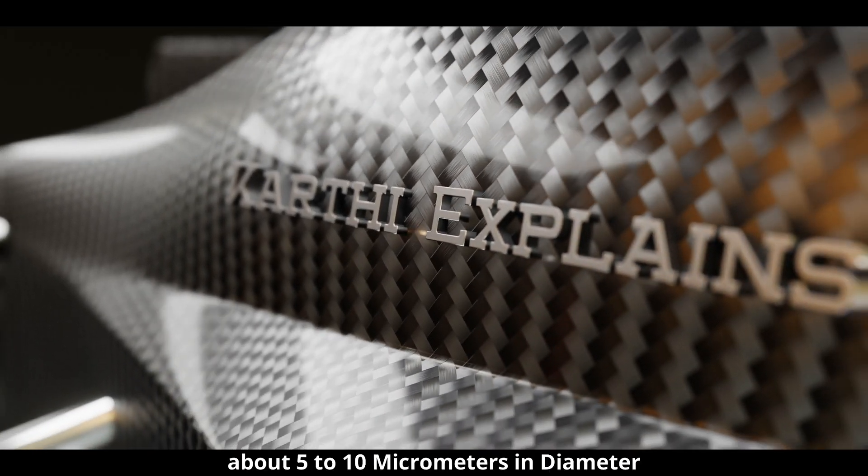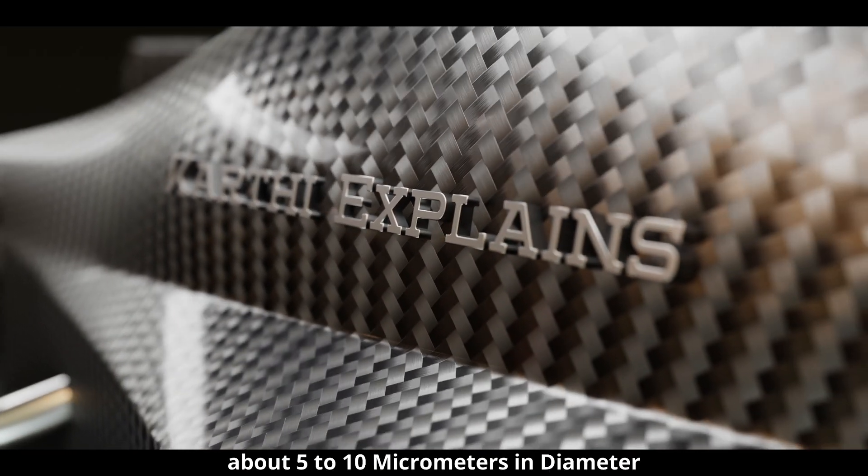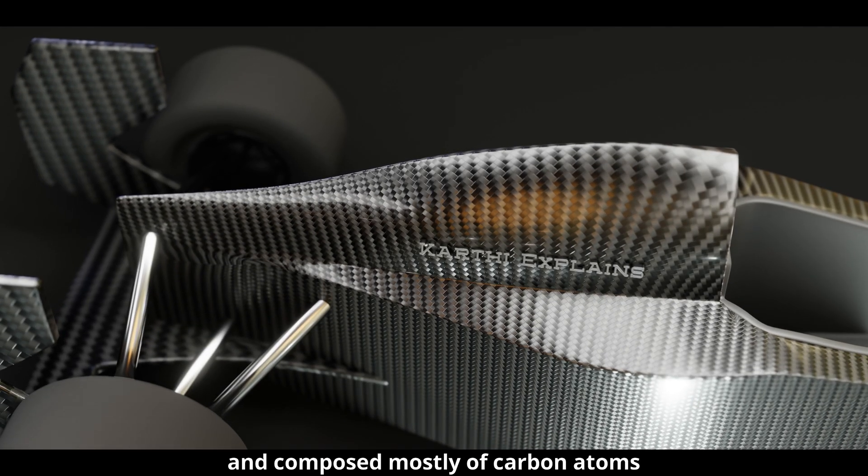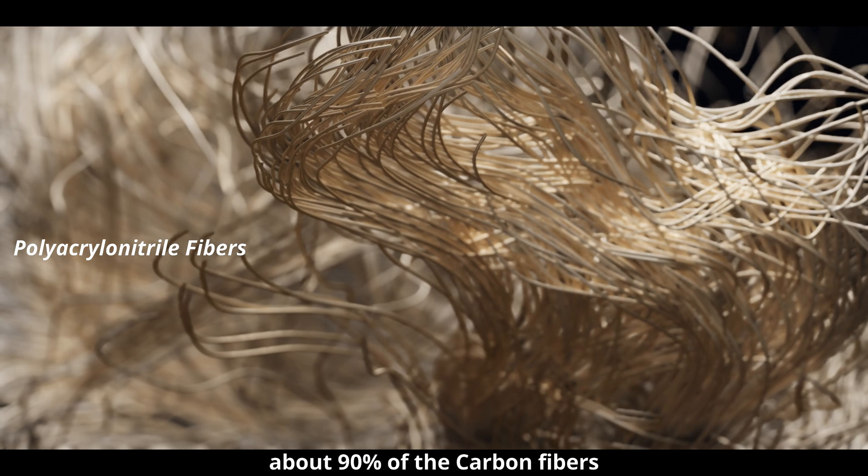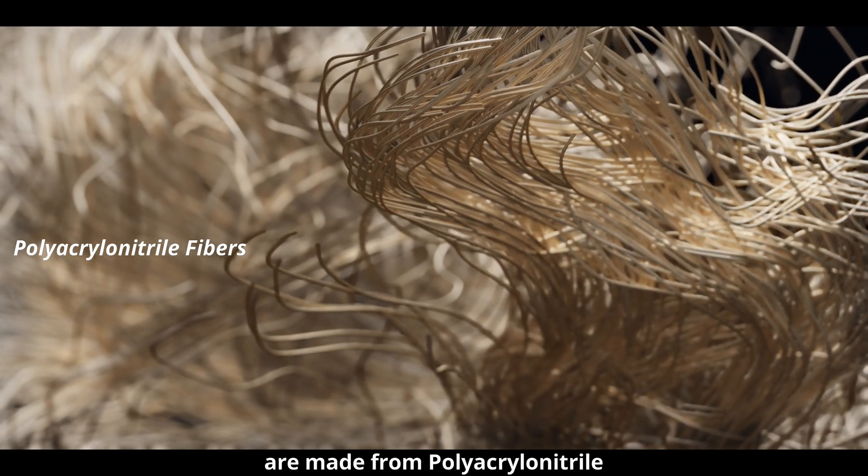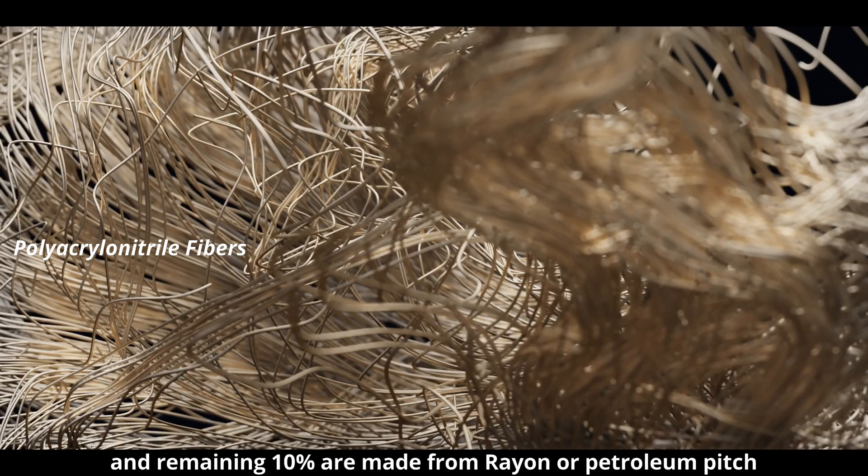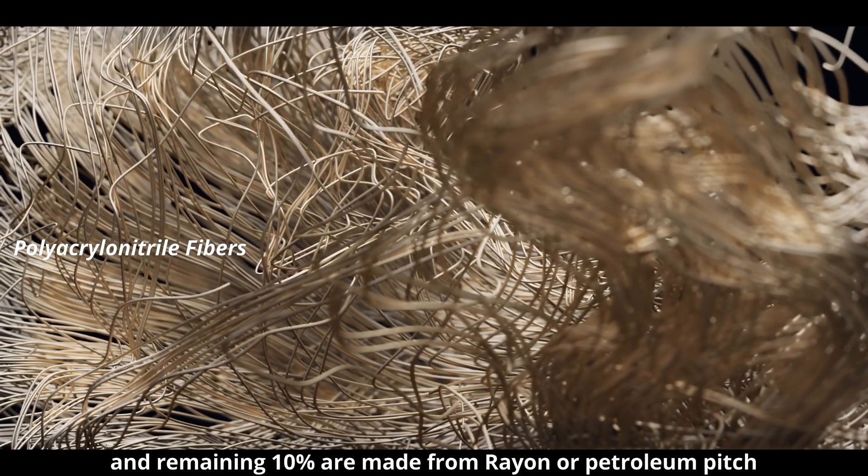Carbon fibers are fibers about 5 to 10 micrometers in diameter and composed mostly of carbon atoms. About 90% of carbon fibers are made from polyacrylonitrile. The remaining 10% are made from rayon or petroleum pitch.